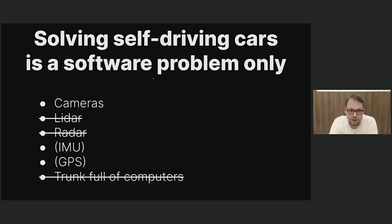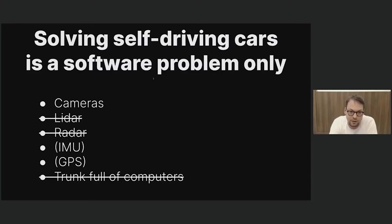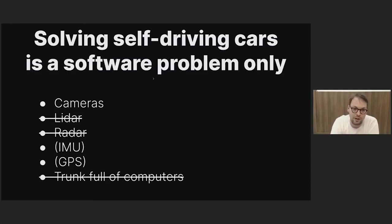The most important part is the cameras. If you have some very good cameras — which the Comma 3 has — that should be all you need, just like a human drives with their eyes. The cameras on the Comma 3 are really amazing. George talked about 120 dB of dynamic range. They do HDR with four exposures at the same time, where each successive exposure has a 16x shorter exposure time, so you can see very dark and very bright areas simultaneously.